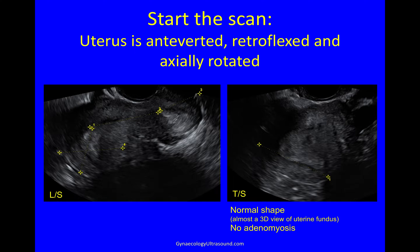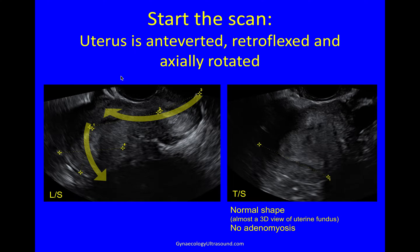Here we've started the scan. The first image is in the longitudinal plane — the patient's head is this way and her feet are this way, the bladder is up there. This is a transvaginal probe in the anterior fornix. You can see straight away that the uterus is antiverted but it's retroflexed. You can see that the fundus of the uterus is pulled backwards by something — antiverted and retroflexed.